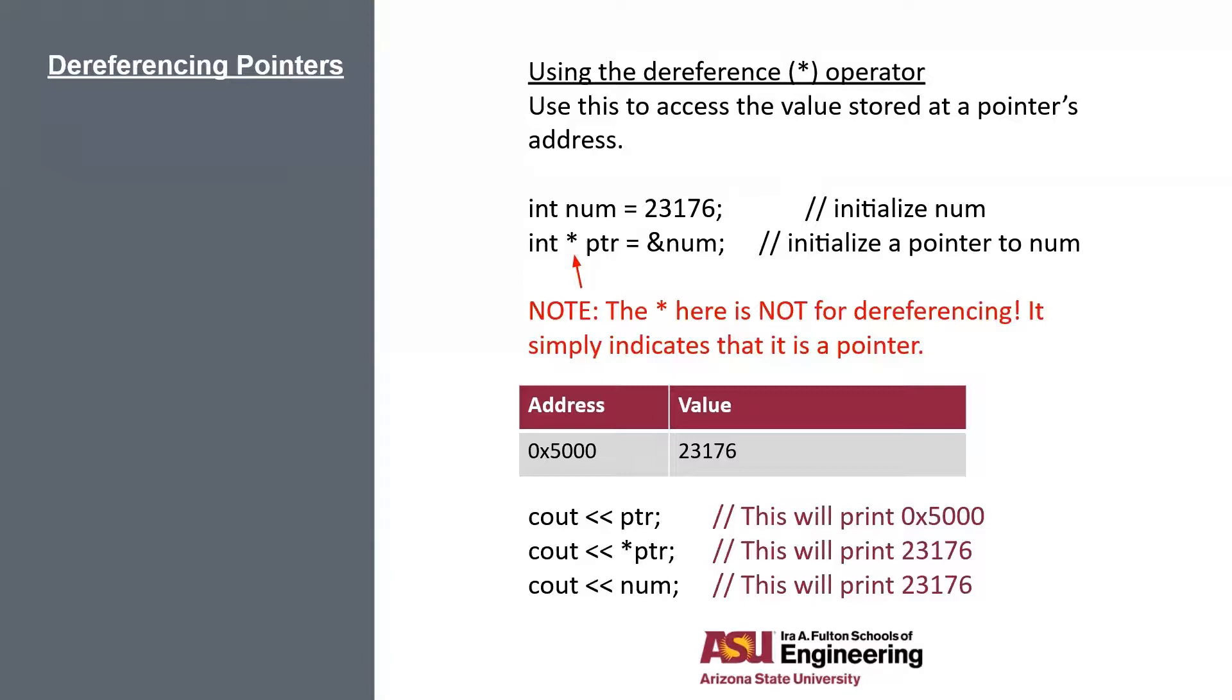And we're printing num here for good measure. Both ways, since they're both pointing to the same place, the pointer is actually pointing to the memory address and num is associated with this memory address, they will both print the same value.